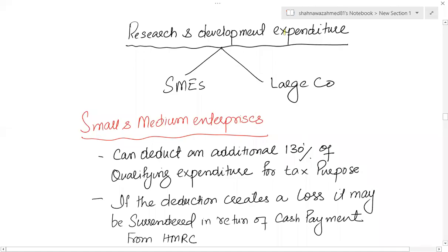Let's talk about the treatment of research and development expenditure. R&D expenditure is considered as an intangible asset, but the expenditure on research is to be charged as an expense in the books of accounts. Development expenditure is sometimes also charged as an expense or sometimes capitalized. As far as the tax treatment is concerned, there are two possible treatments.